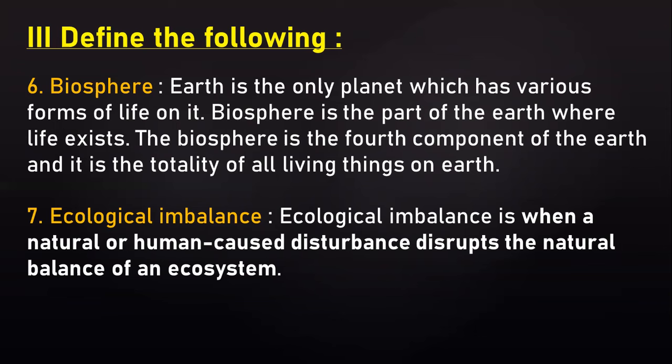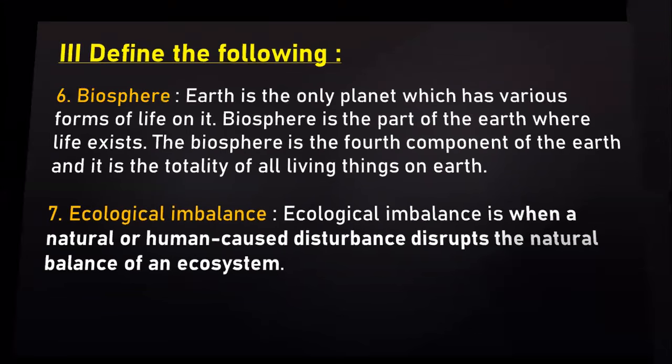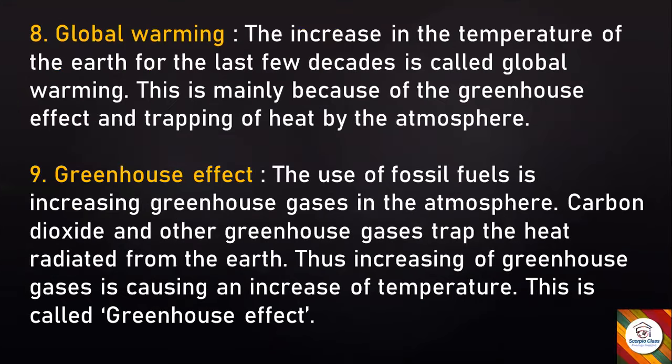Ecological imbalance: Ecological imbalance is when a natural or human-caused disturbance disrupts the natural balance of an ecosystem. Next, Global warming: The increase in the temperature of the earth for the last few decades is called global warming. This is mainly because of the greenhouse effect and trapping of heat by the atmosphere.